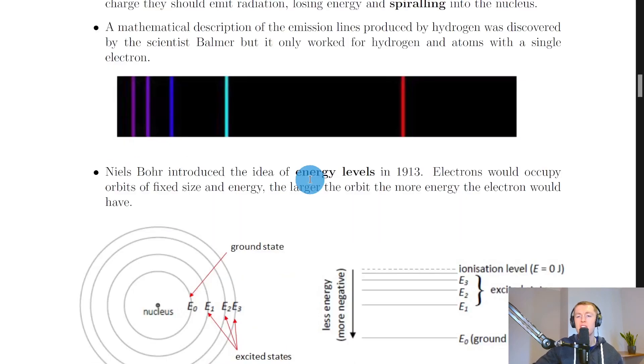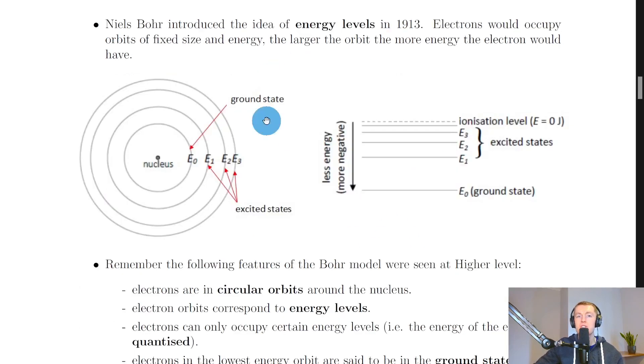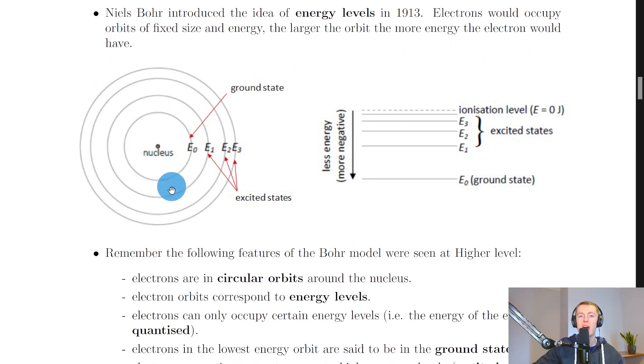So we're going to go on and see how Bohr's model of the atom allowed us to then understand atomic spectra and energy levels within atoms. So it says that Niels Bohr introduced the idea of energy levels in 1913. Electrons would occupy orbits of fixed size and energy and the larger the orbit the more energy the electron would have. So Bohr's model of the atom involved a positively charged nucleus in the centre of the atom with electrons then being able to occupy well-defined energy levels which he termed excited states E1, E2 and E3 and so on with the energy level closest to the nucleus being termed the ground state.